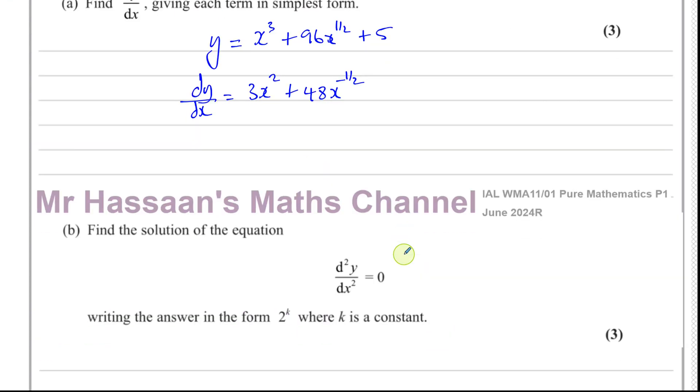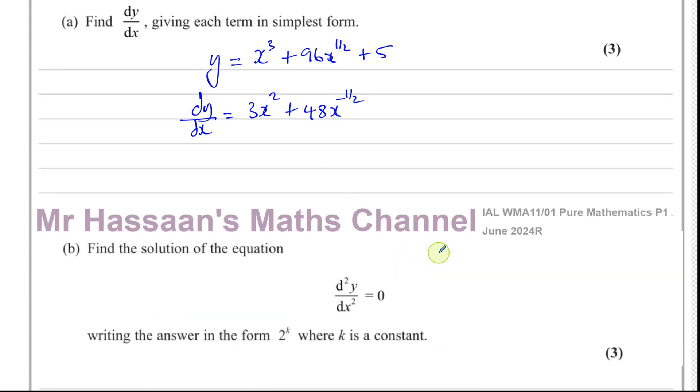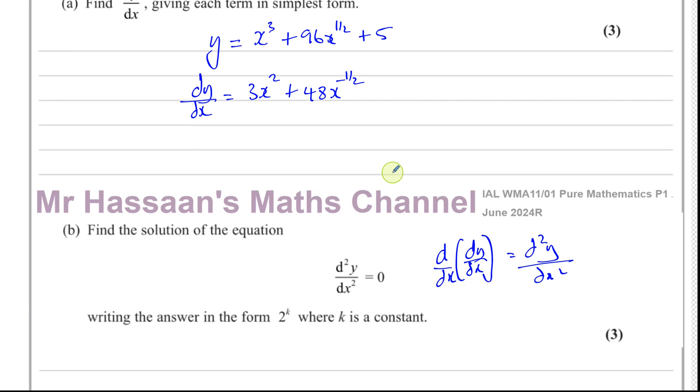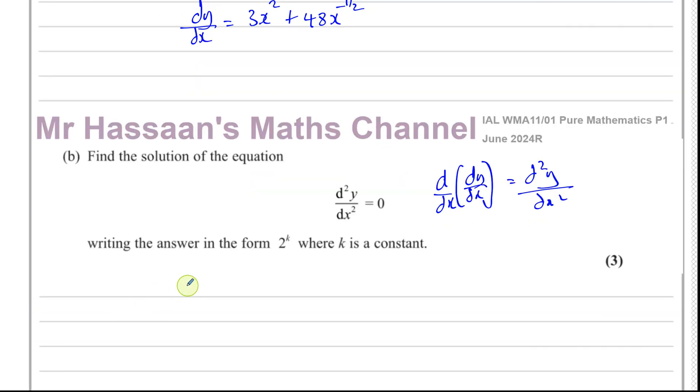Then part b says find the solutions of the equation d squared y dx squared equals 0. So you find d²y/dx² by taking the gradient function dy/dx and differentiating that with respect to x. So we've got to take this and differentiate this. Let's write down what dy/dx is first. dy/dx is equal to 3x squared plus 48 x to the power of negative a half.